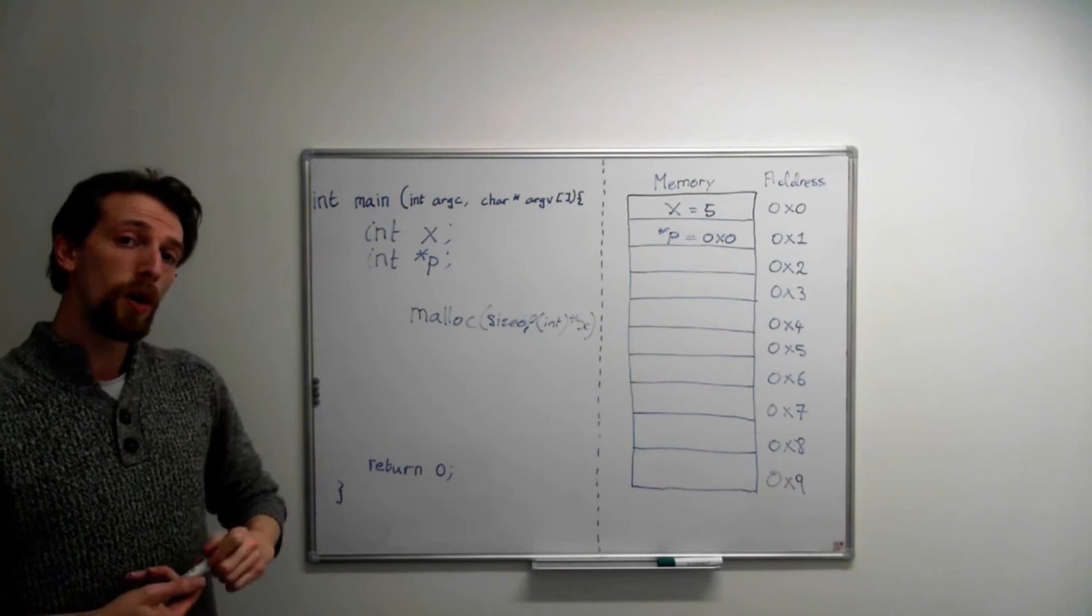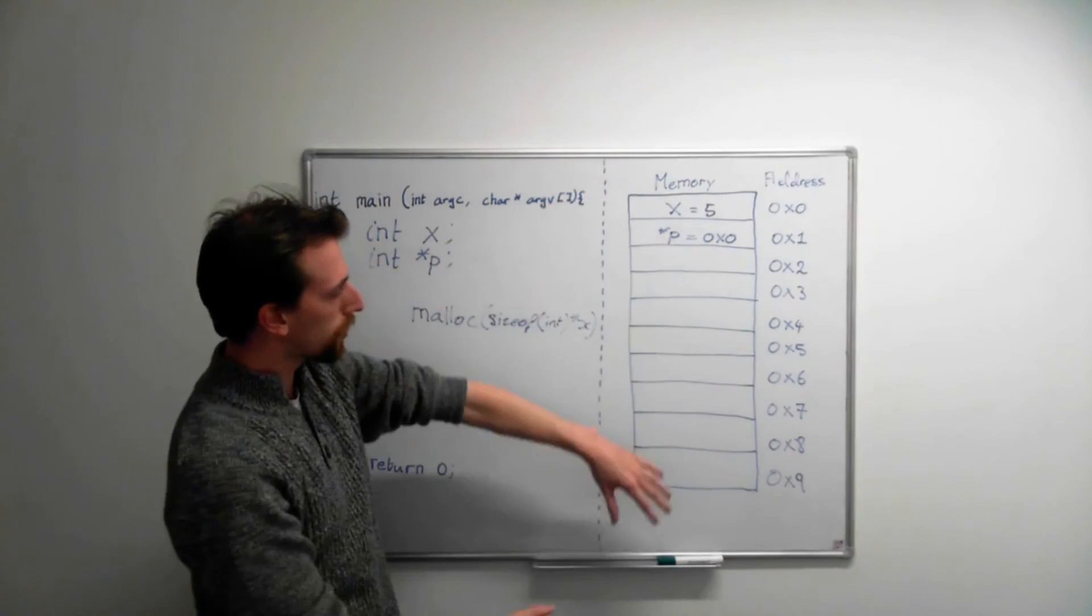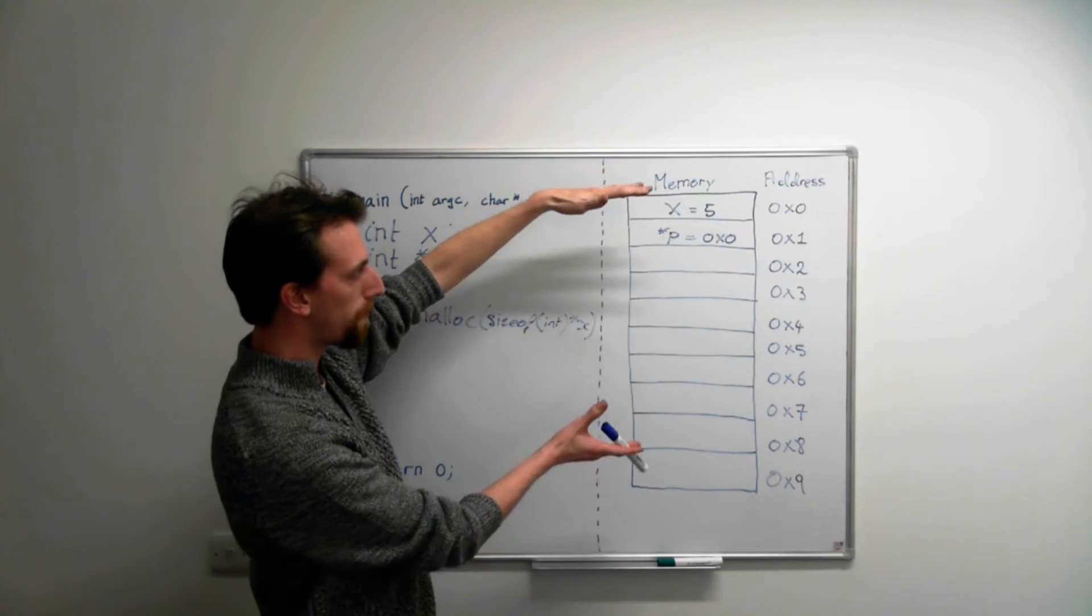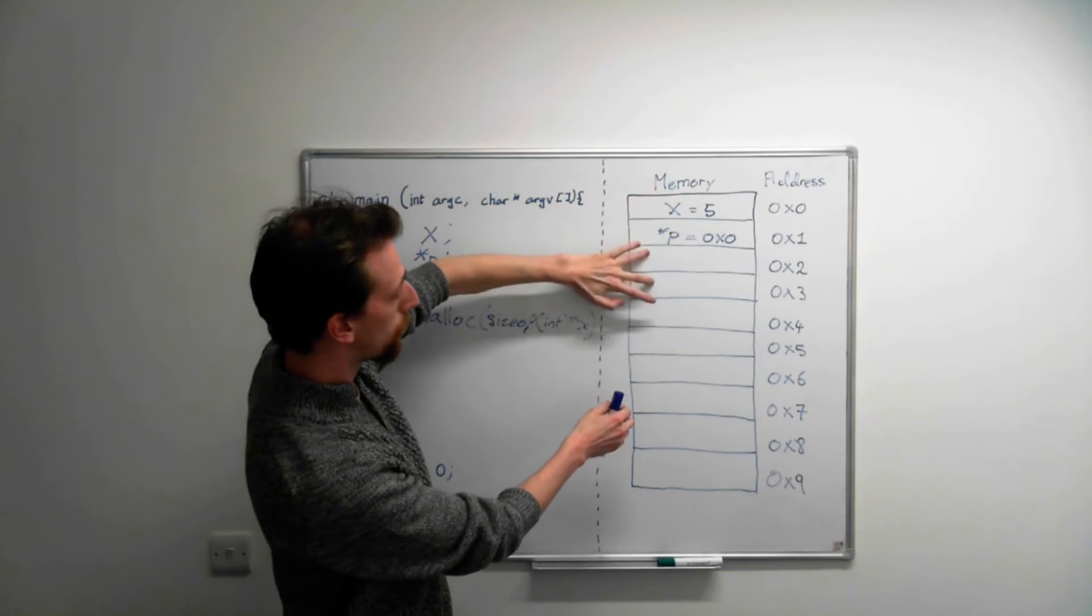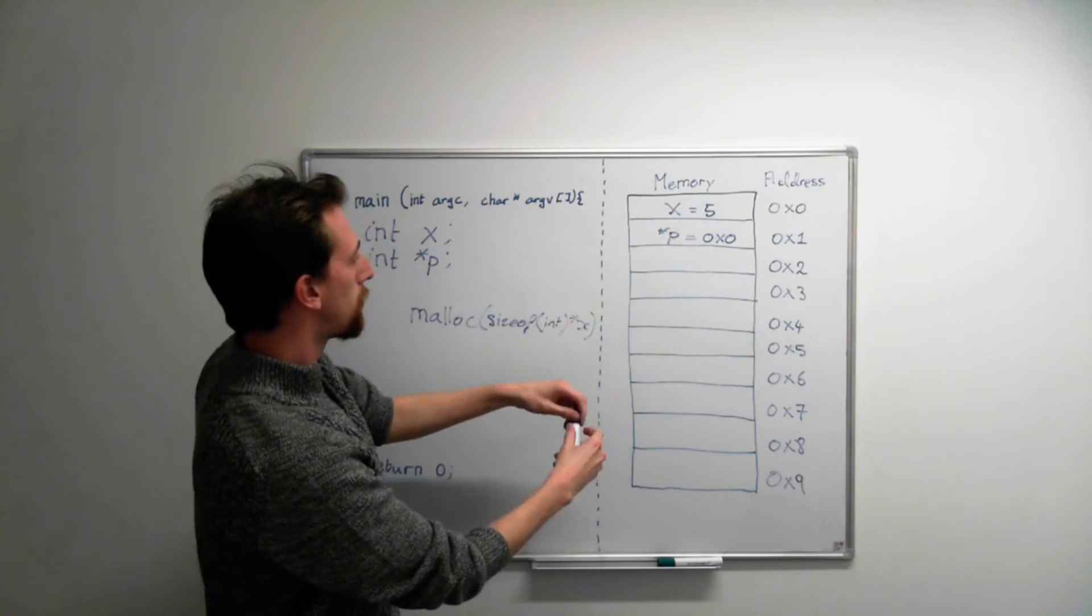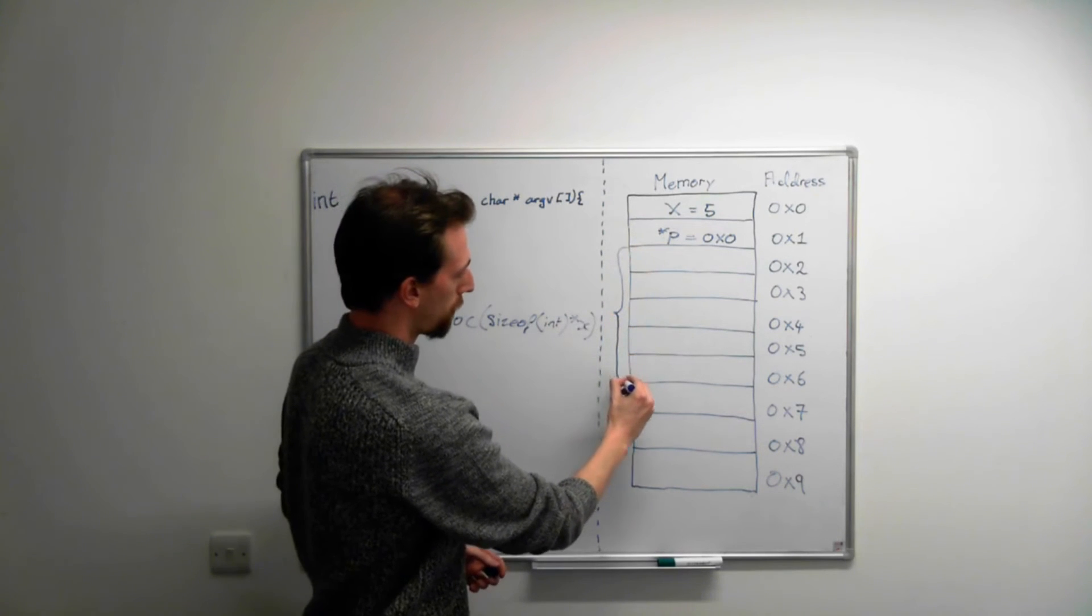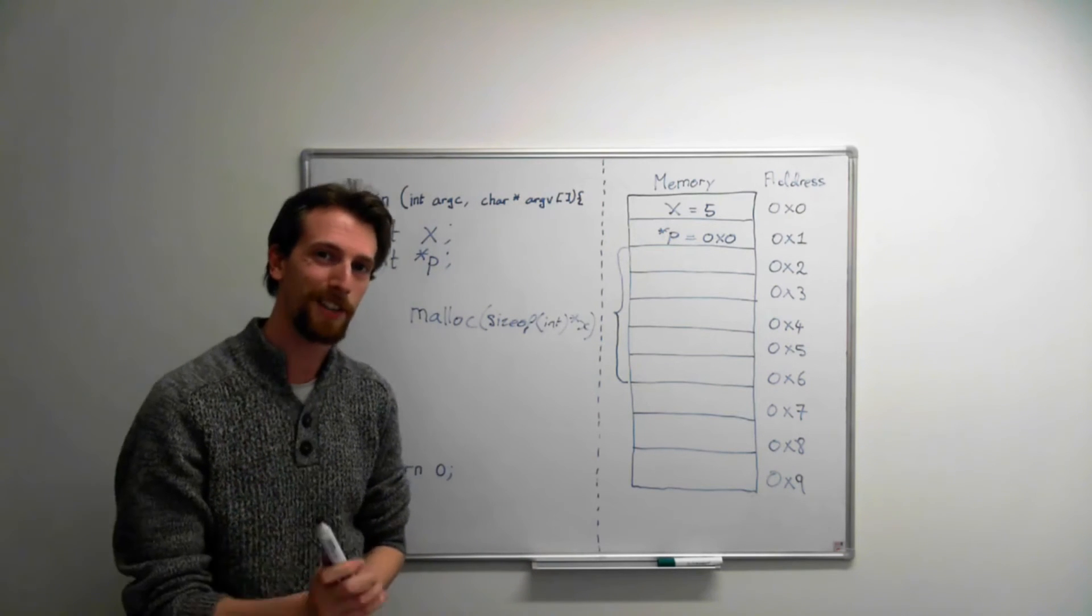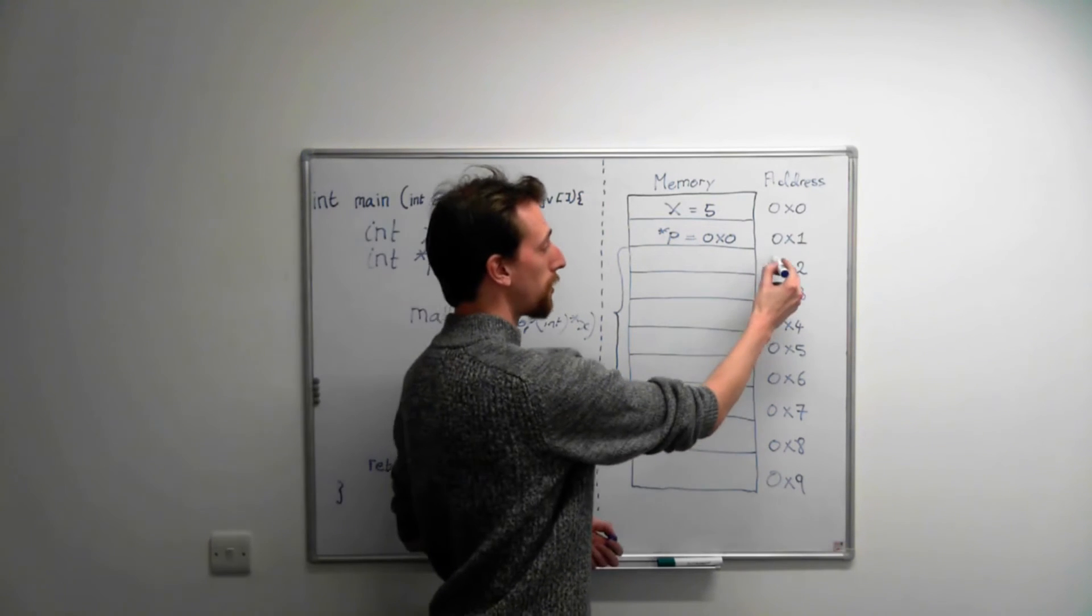Now, what malloc does is it goes off to our memory over here and it looks up and down and it tries to find some space where it can fit 5 integers side by side. So in this case, 1, 2, 3, 4, 5. So it allocates these. These become our new array.